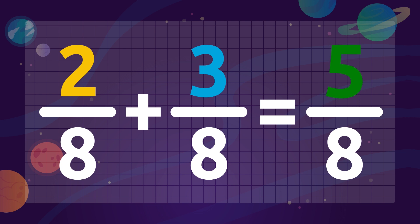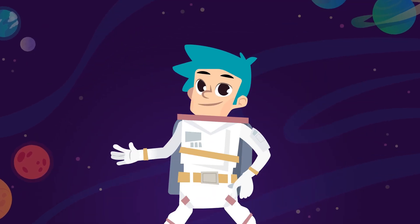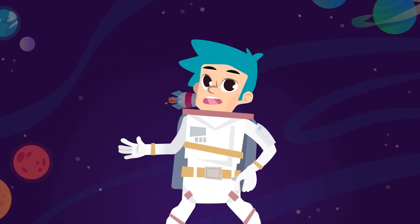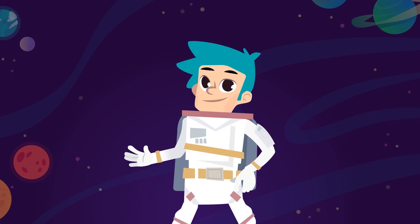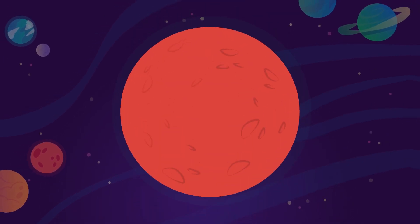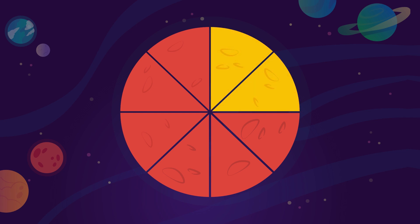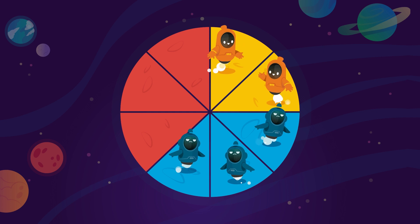Are you up for a challenge to practice a bit more? In the Smile and Learn universe there's a planet called Smileython. This planet is divided into eight equal parts. Two eighths of the planet are occupied by friendly aliens and the remaining three eighths by grumpy aliens.